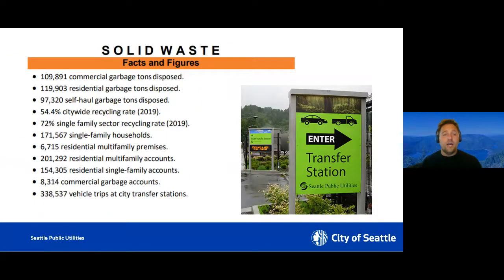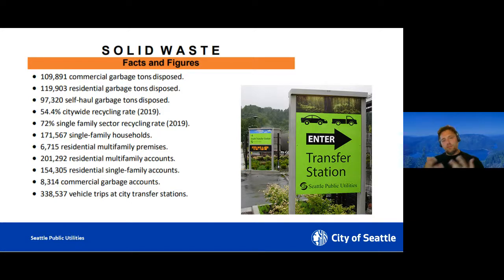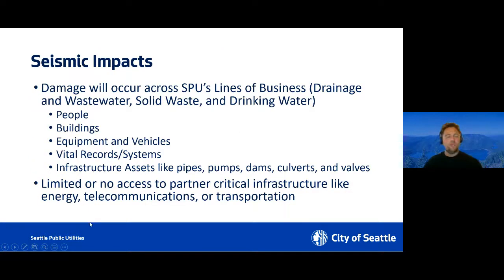Our third utility is solid waste — your yard waste, garbage, and recycling. From 2019 figures: about 110,891 tons of commercial garbage, nearly 120,000 tons of residential garbage, and 97,320 tons of self-haul garbage at transfer stations, including construction waste. Drinking water, drainage and wastewater, and solid waste are the three things Seattle Public Utilities is responsible for. All three utilities will be significantly impacted by an earthquake, and the most important asset we have — that will be severely impacted in a large quake — is people: both our community and the staff who operate and monitor our systems.